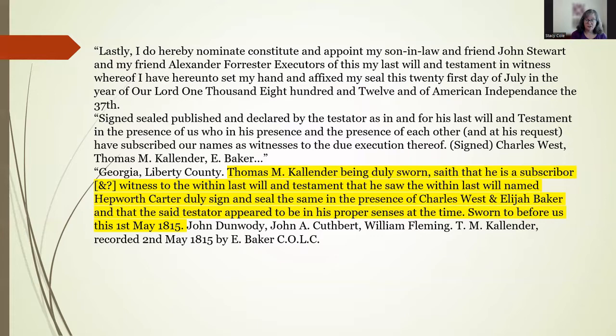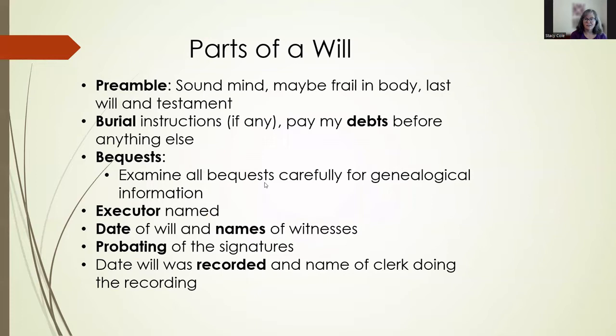Also notice the abbreviation COLC after the name of E. Baker — that stood for Clerk, Ordinary, Liberty County. 'Ordinary' was the probate judge. These abbreviations were commonly used and I've included a list in your handout. So those are the standard parts of a will. If you're familiar with what the wills look like in the county you're researching, you'll be able to read them no matter how poor the handwriting — and you won't misinterpret a standard piece of language as telling you something in particular about your ancestor.